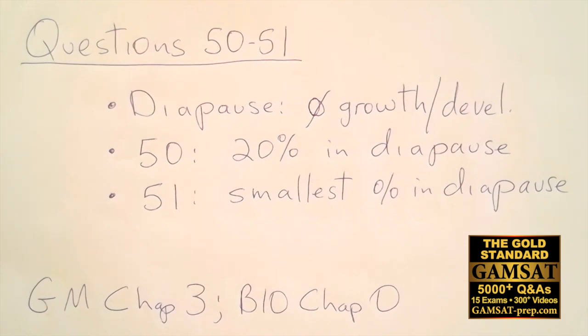Whereas answer choice B would be around 90%, answer choice C, well that's 100%, and answer choice D that would be around 70%. So by far and away, the percentage which has the smallest percent in diapause, which does respond to their question, would be A. So 51 is A.